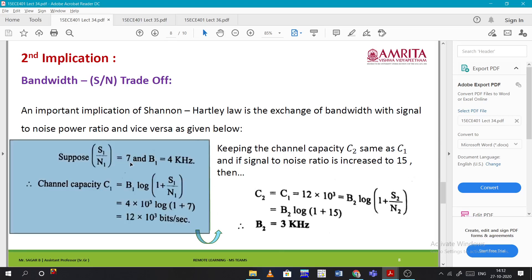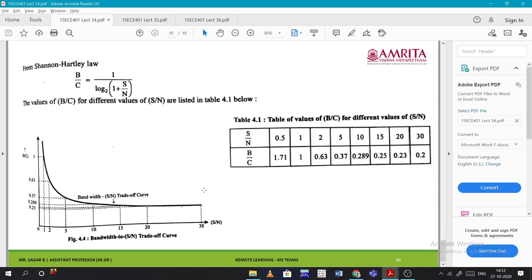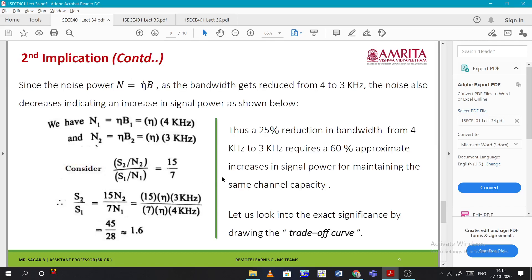When S/N is 7, B is 4. When S/N is 15, B is 3. As we know, these are inversely proportional. When you plot a graph, it will be like an exponentially decaying curve. Now he is observing how much change we need to bring in the signal to maintain the same channel capacity.